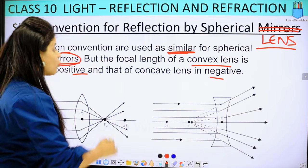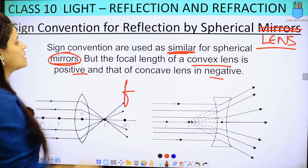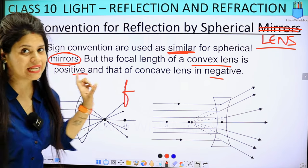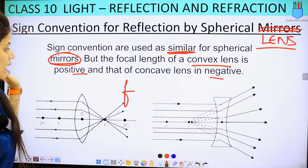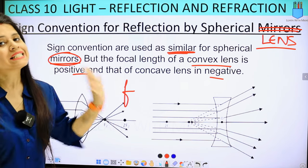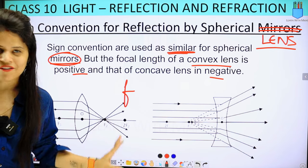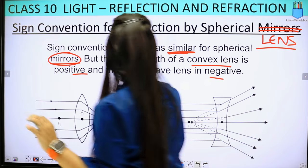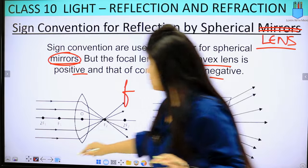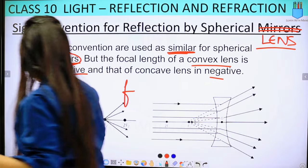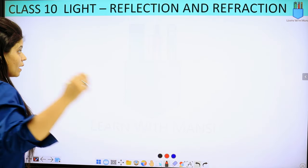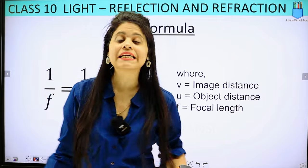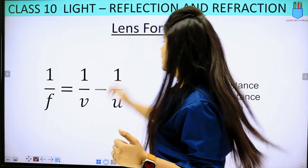When we talk about focal length, the convex lens is positive and the concave lens is negative. The other things we have studied in the mirror — all signs are the same. Now we have seen the sign conventions for spherical lenses. Now let's talk about the lens formula, which we have studied the same way as the mirror formula.